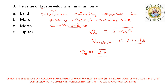Yahan pe options diye gaye hain: Earth, Mars, Moon, and Jupiter. Toh Moon ka right option rahega kyunki iska radius kam hai as compared to Earth, Mars, and Jupiter. Toh iski escape velocity bhi kam hogi kyunki iska radius kam hai.